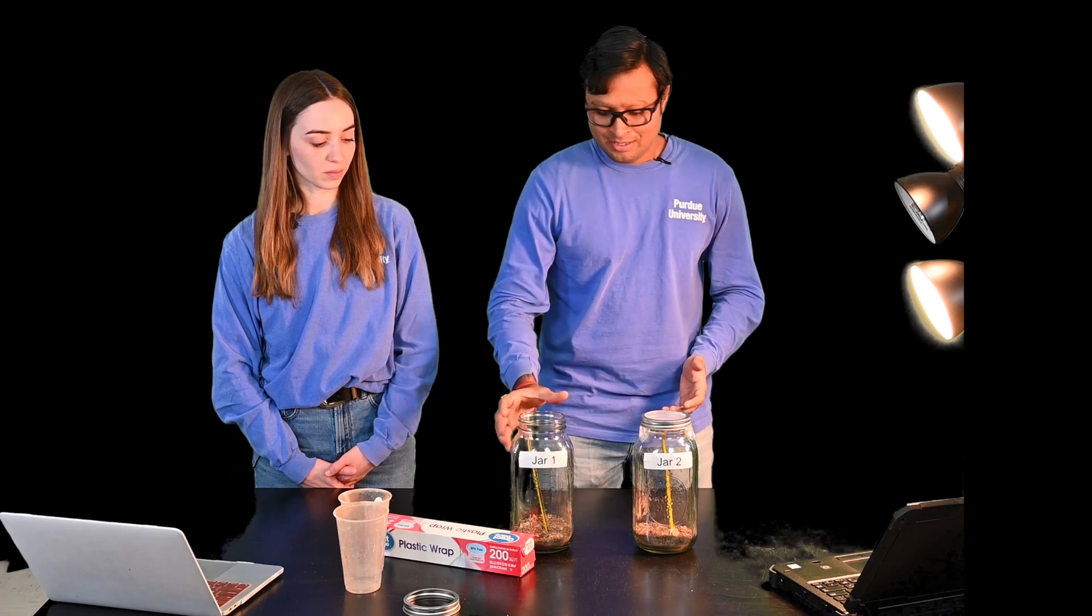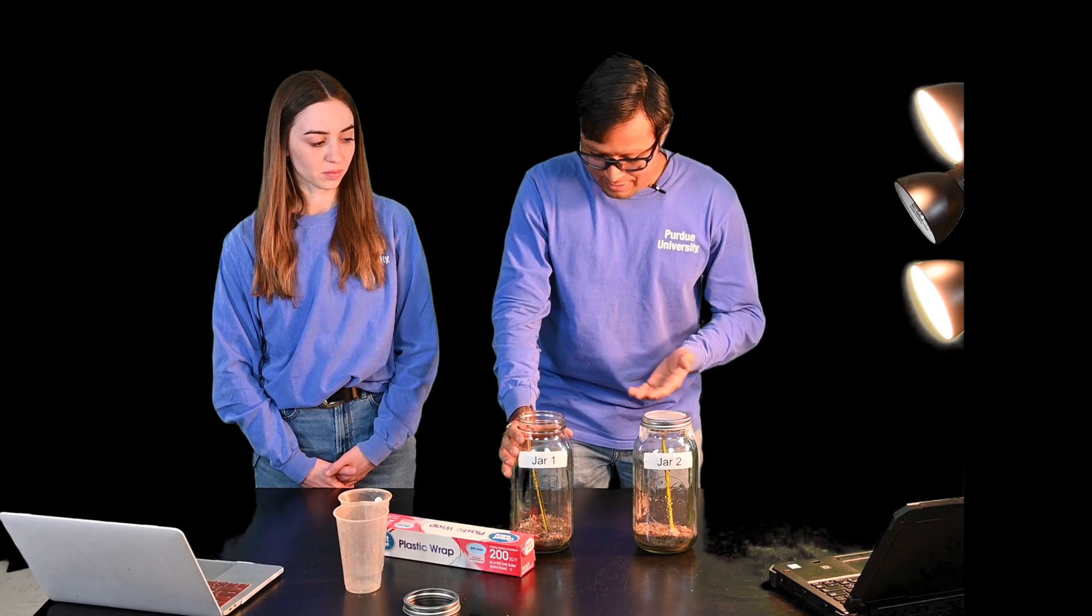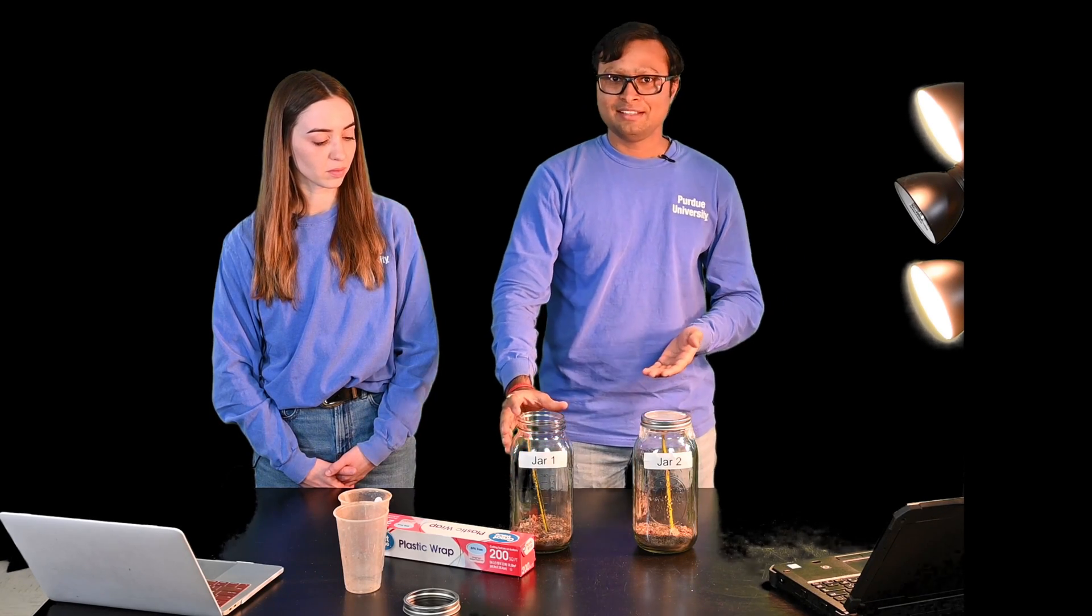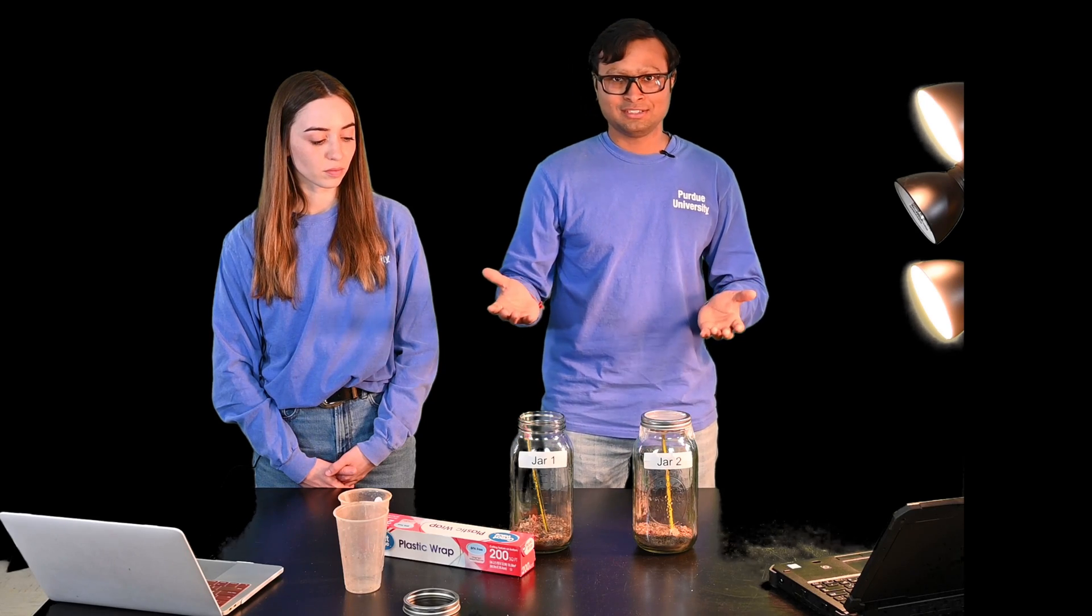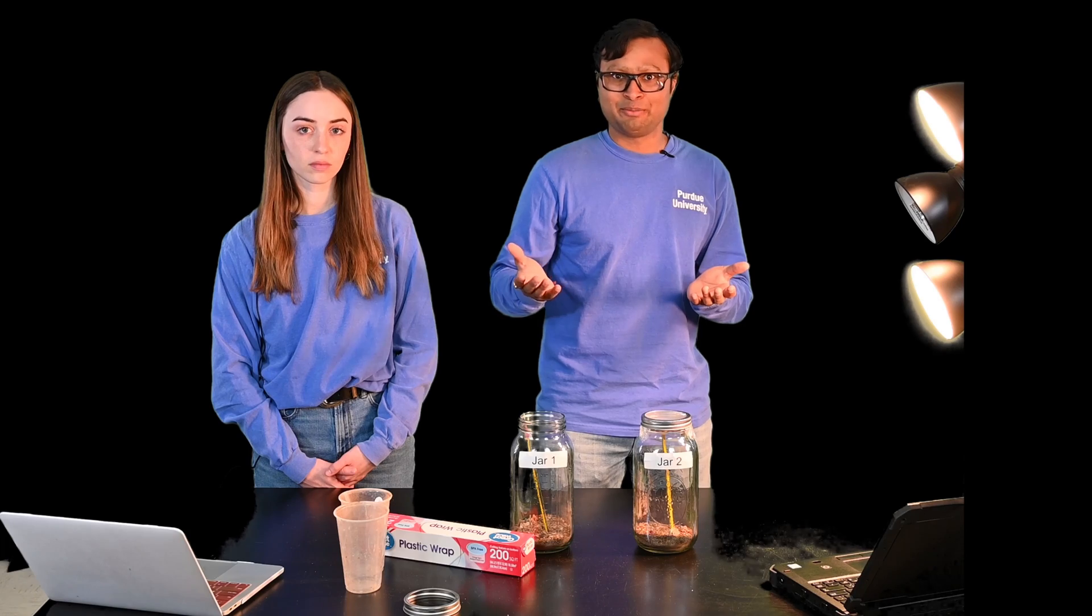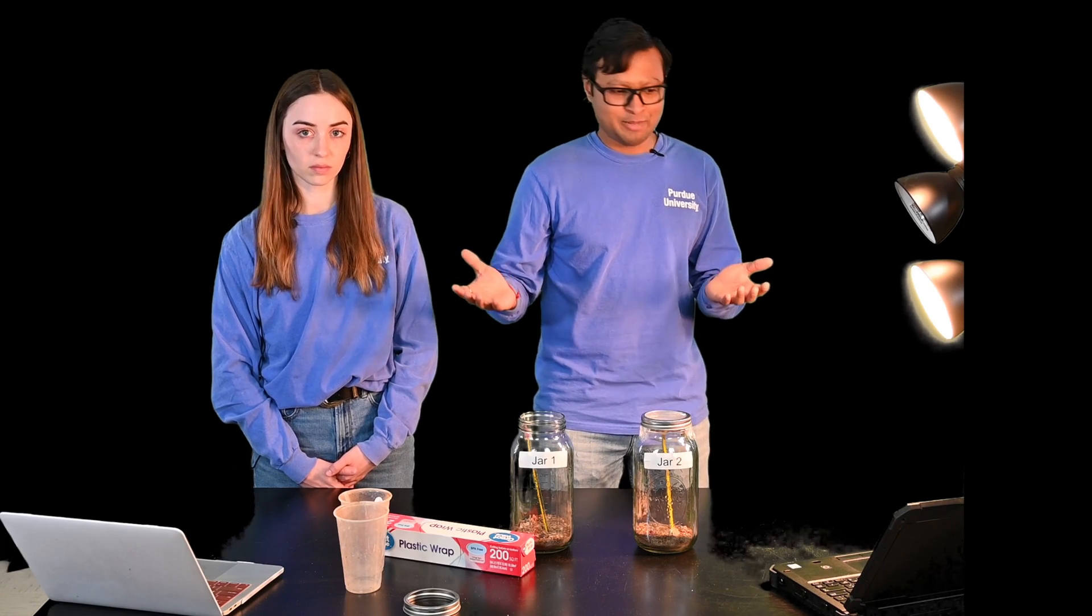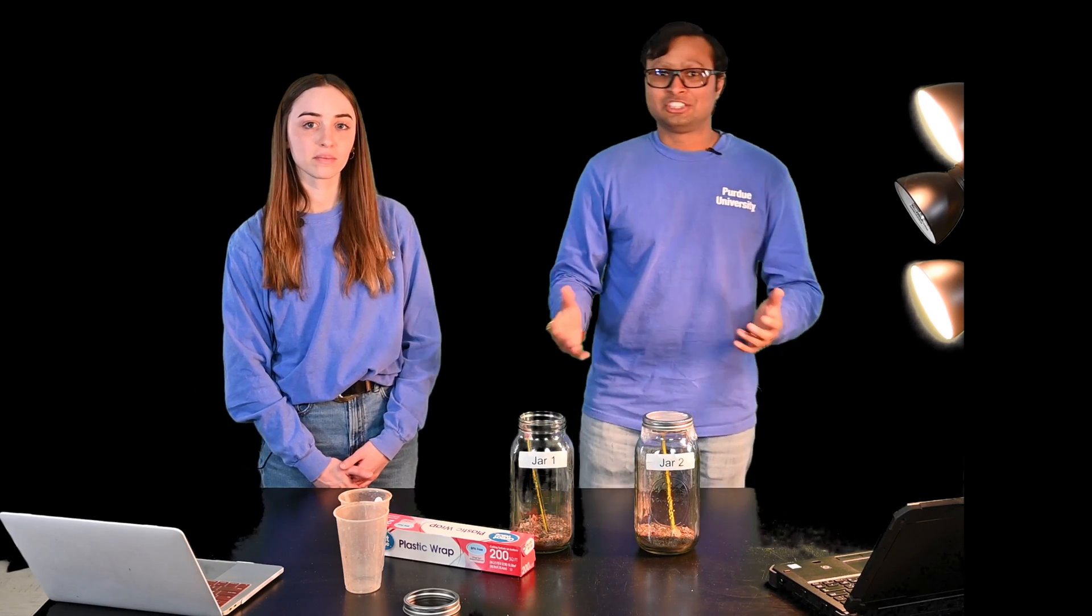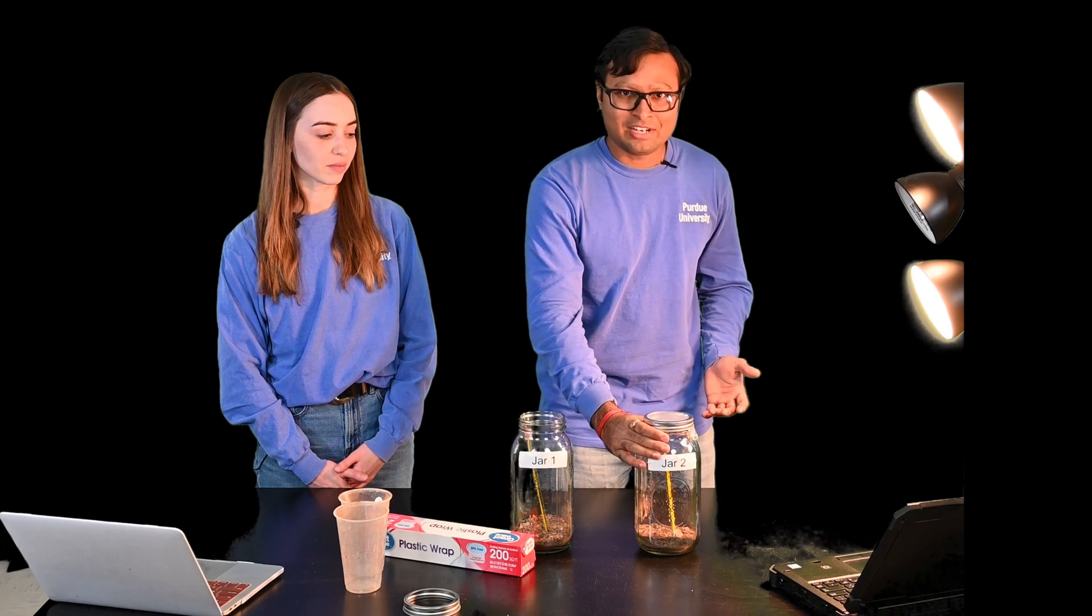So what did you notice in the experiment? Let's look at your data. This is our model earth which is jar one and we see that the temperature is almost constant. There's not much increase or decrease in the temperature over the period of our experiment. Whereas in jar two which is covered by the plastic wrap we observe that the temperature rises much more over the course of the experiment.